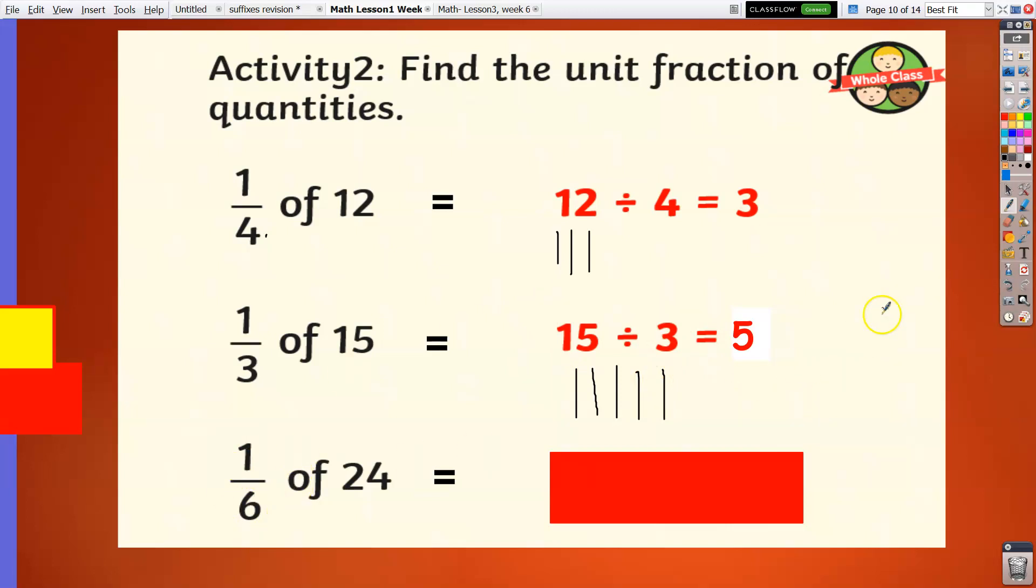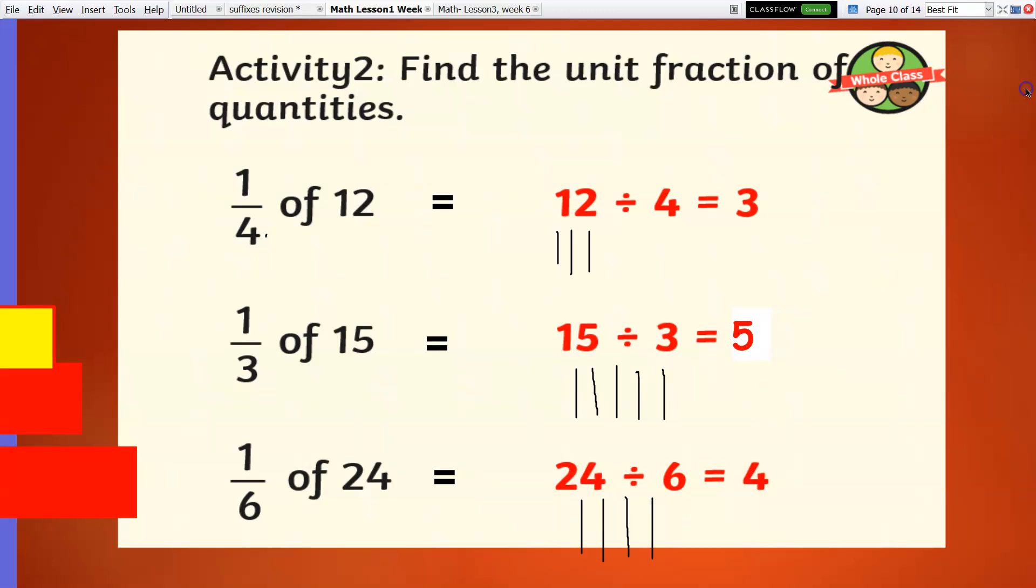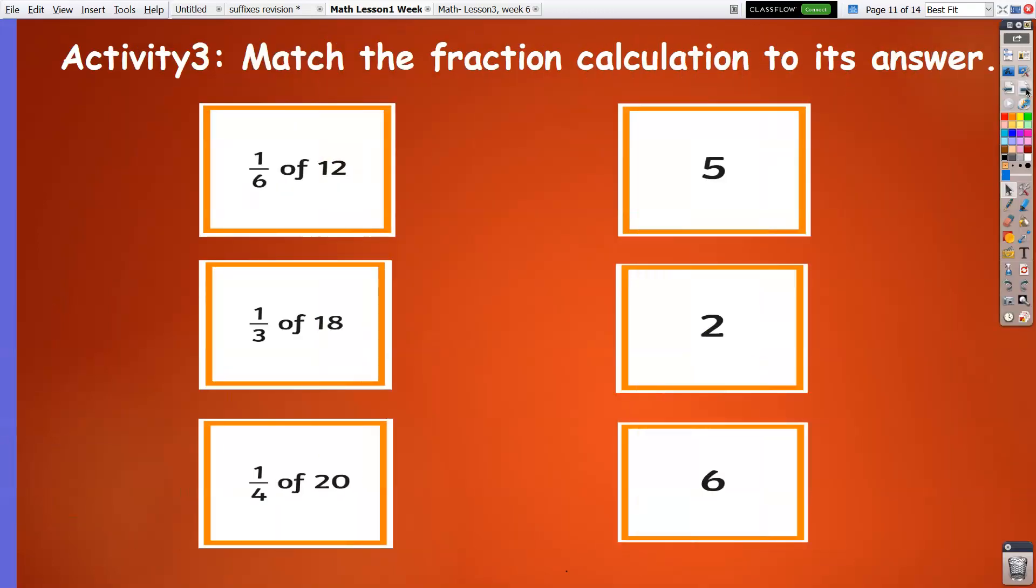And one-sixth of 24. One-sixth of 24, or 24 divided by 6, is equal to 4. You may do skip counts again by 6: 6, 12, 18, 24. So we have 4 as the answer. Very simple.